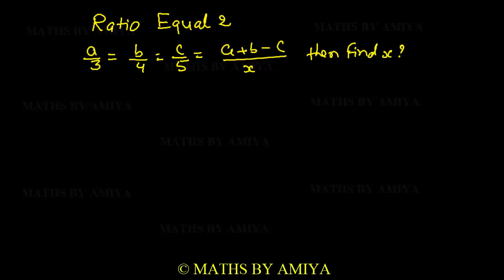Hello friends, welcome to the world of maths. Let's continue with the ratio equal to concept. We have a/3 = b/4 = c/5 = (a+b-c)/x. Find the value of x. One basic method is to take a/3 = b/4 = c/5 = k.